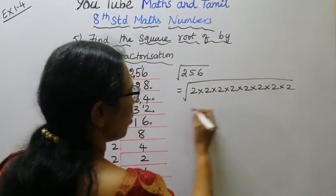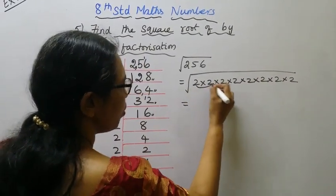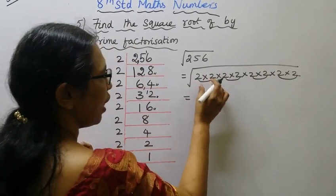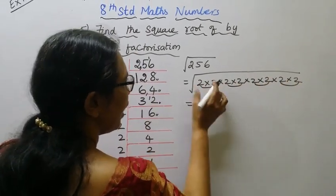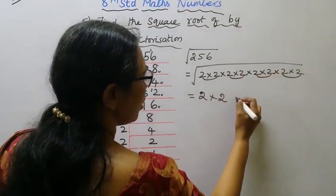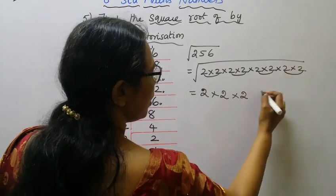I have pairs here, here, here. This is the pair. The pairs multiply together.